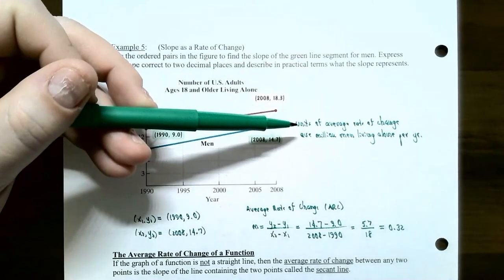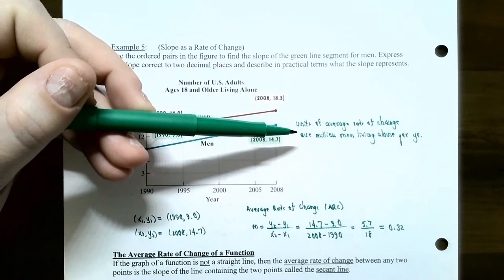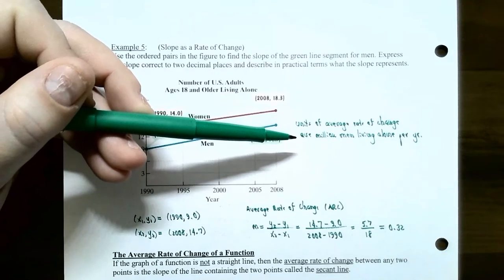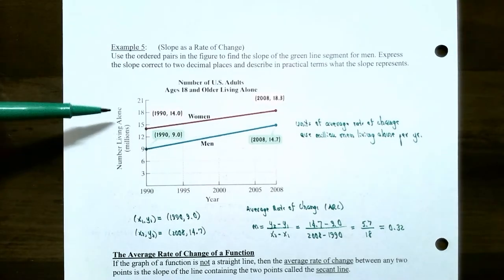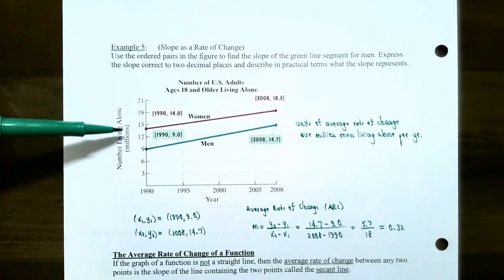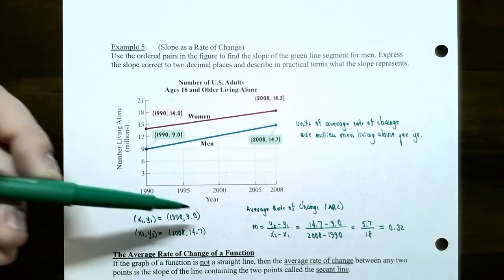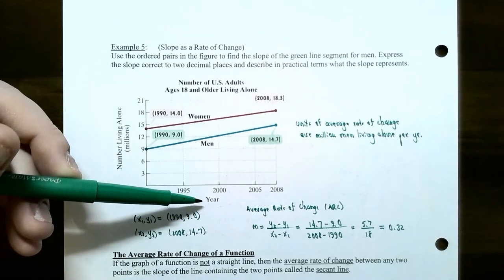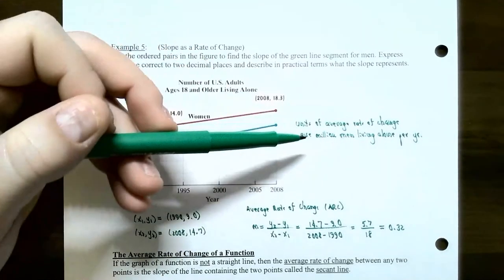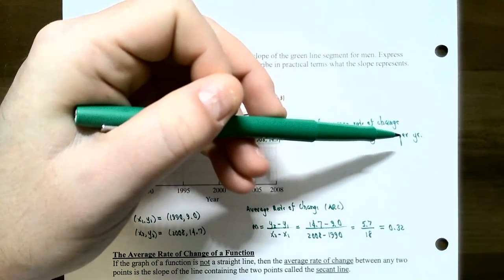The units of the average rate of change will be the change in the dependent variable divided by the change in the independent variable units. The dependent variable is the number of United States men living alone, in millions. The independent variable on the horizontal axis is representing years. So the units of the average rate of change will be millions of men living alone per year.